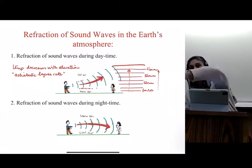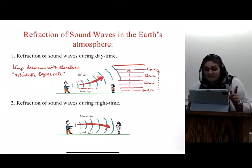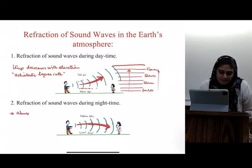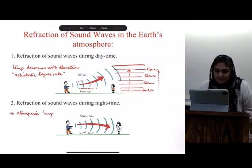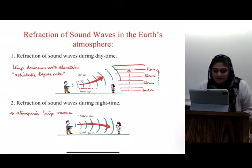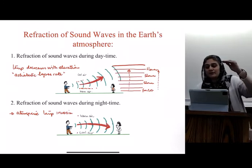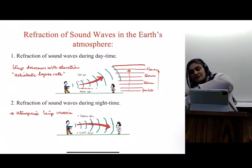So sound will be deflected down. And that temperature, particular temperature gradient is called atmospheric temperature inversion, where warm air is here and cool air is at the bottom. And sound will travel towards the earth.